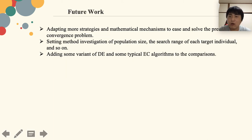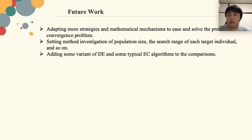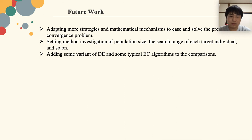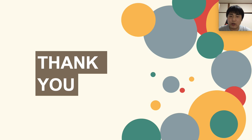For future work, we would like to adapt more strategies and mathematical mechanisms to ease and solve the premature convergence problem, and do some investigation into population size settings and the search range of target individuals. We also want to add some variants of differential evolution and typical evolutionary algorithms to the comparison. That's all — thanks for your attention.